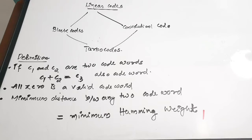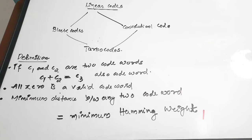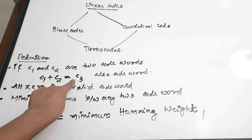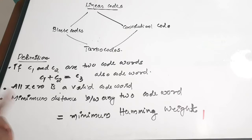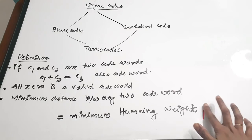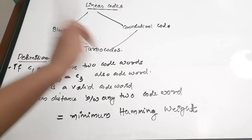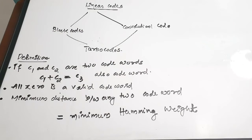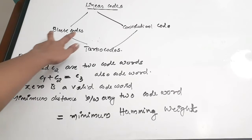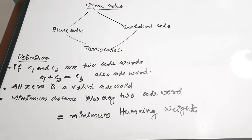The third property is that the minimum distance between any two code words is equal to the minimum Hamming weight. Minimum Hamming weight means the minimum number of non-zero elements, excluding the all-zero code word. So excluding the all-zero code word, the minimum number of non-zero elements in any code word is the minimum Hamming weight, and that should equal the minimum distance between any two code words. You will be very clear about all these properties when we do the example at the end.